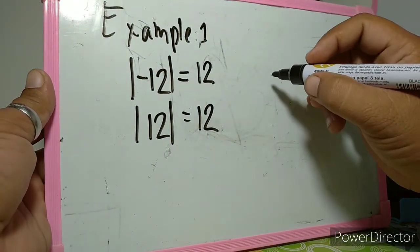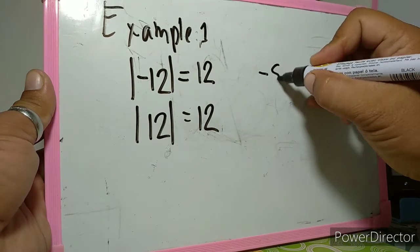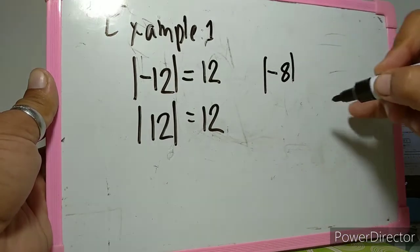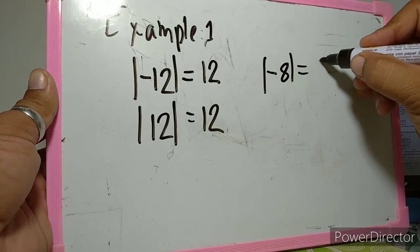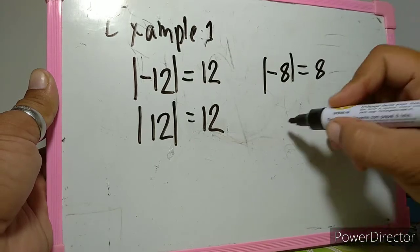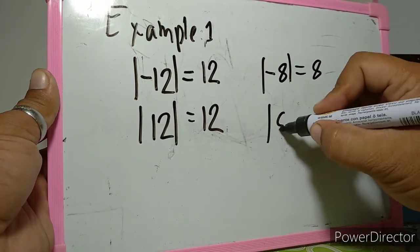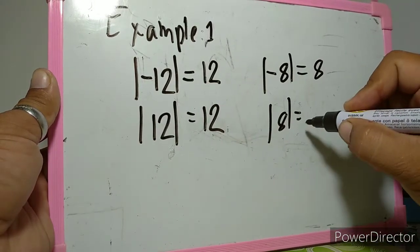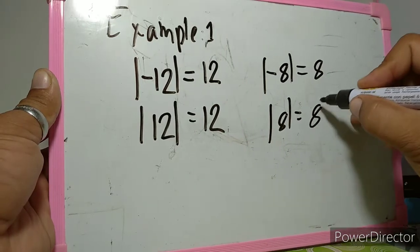The absolute value of negative 8 is 8, and the absolute value of positive 8 is also equal to 8.